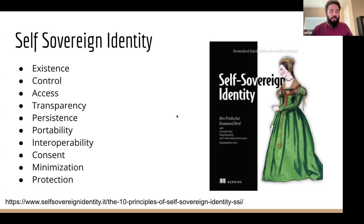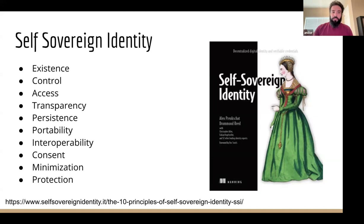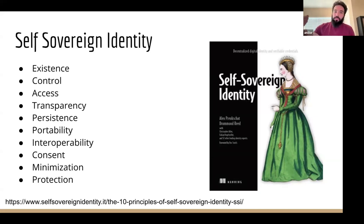Decentralized identity and self-sovereign identity aren't entirely synonymous. Self-sovereign identity is a term coined by Christopher Allen, covering 10 attributes: existence, control, access, transparency, persistence, portability, interoperability, consent, minimization, and protection. These are the levers and attributes you want in an identity system. The value proposition of decentralized identity includes greater control over your identifier, better portability, more ability to interoperate with other systems, and the ability to minimize the data you share with other parties.